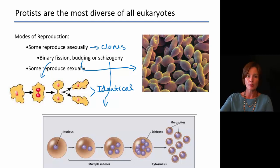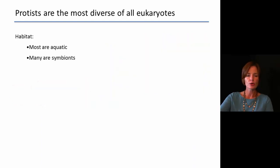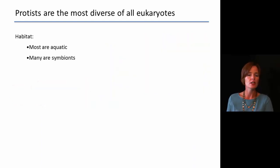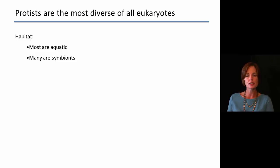So protists have a multitude of nutrient capabilities, different ways to move around, different modes of reproduction, and also different habitats they can live in. As far as habitats go, most are going to be aquatic organisms — primarily freshwater, but some are marine organisms.